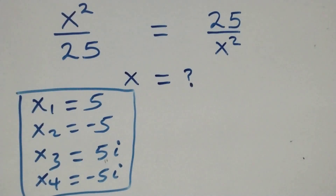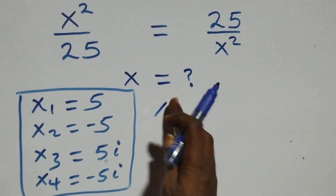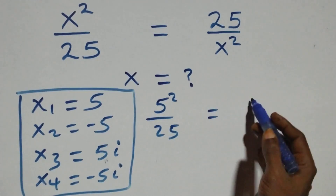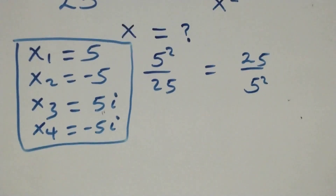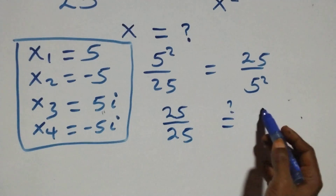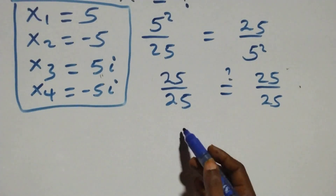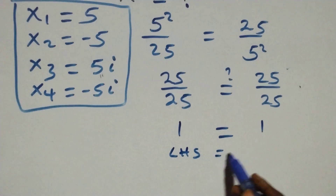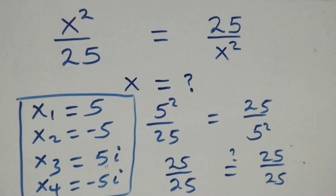Let's check if x equals to 5 satisfies the given problem. The equation becomes 5 squared over 25, which equals 25 over 5 squared. So 5 squared is 5 times 5, also 25 over 25. We can write 25 over 25 as 1, which equals 1 here. Left hand side equals the right hand side, so x equals to 5 satisfies this given problem.